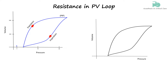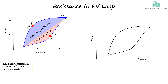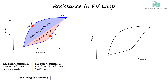There are two types of resistance encountered during the flow of air into the lungs: inspiratory and expiratory resistance. Inspiratory resistance occurs due to resistance to airflow in the airway, whereas expiratory resistance happens due to opposition to the elastic recoil of the lung during passive exhalation. They reflect the resistive work of breathing and the elastic work of breathing, respectively.